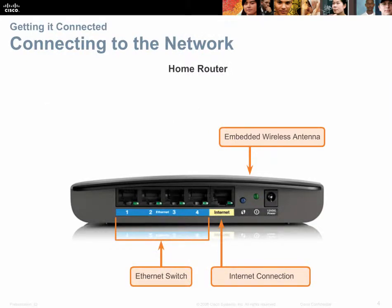This is a common home router. It has an embedded wireless antenna — hidden inside the chassis. It also has an embedded Ethernet switch with four blue LAN ports, and a yellow WAN internet interface. So there are really three interfaces on this home router.